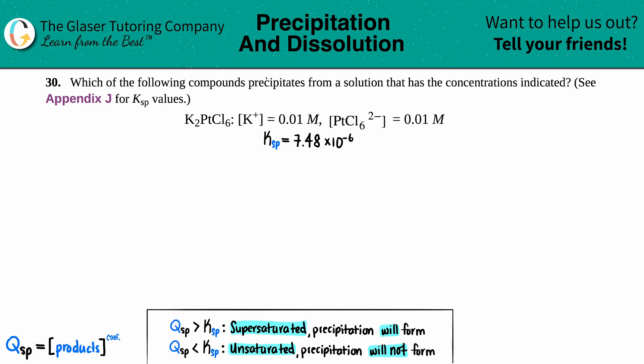Number 30: Which of the following compounds precipitates from a solution that has the concentrations indicated? See Appendix J for the Ksp values. In this case we have the solid K2PtCl6. They told us that the potassium ion concentration is 0.01 molarity.